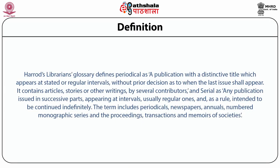Definition. Arrows-Levin's glossary defines periodical as a publication with a distinctive title which appears at stated or irregular intervals without prior decision as to when the last issue shall appear. It contains articles, stories or other writings by several contributors. Serial is defined as any publication issued in successive parts appearing at intervals, usually regular ones, and as a rule intended to be continued indefinitely. The term includes periodicals, newspapers, annuals, numbered monographic series, and the proceedings, transactions and memoirs of societies.